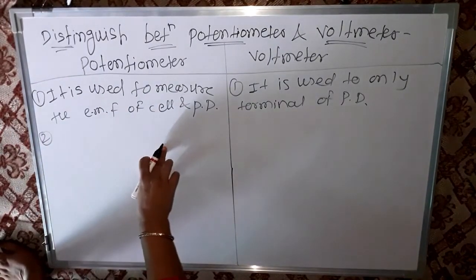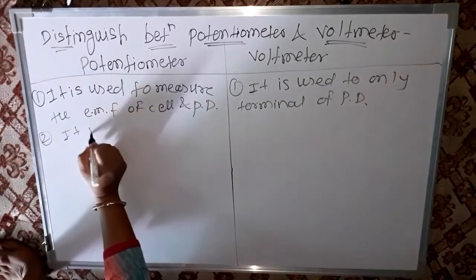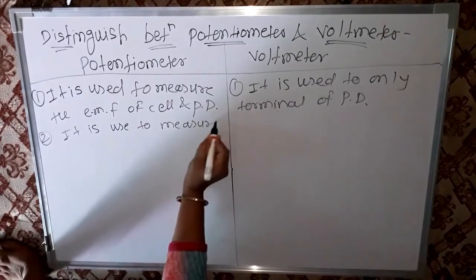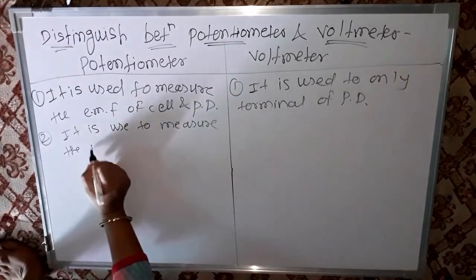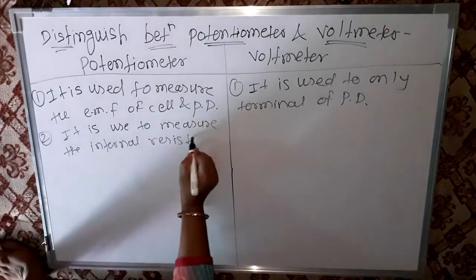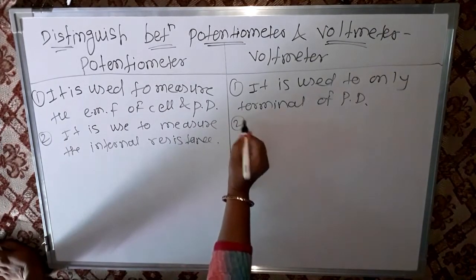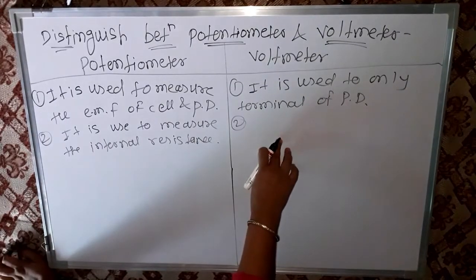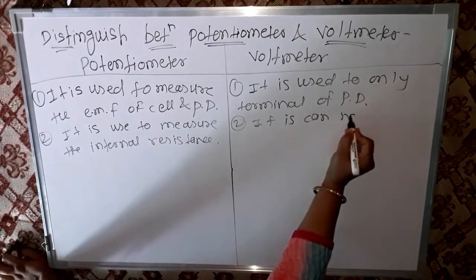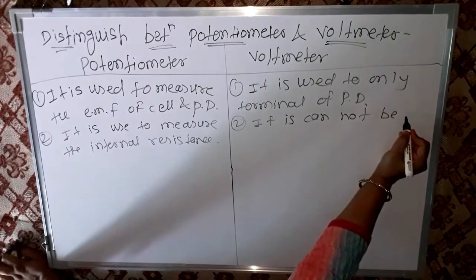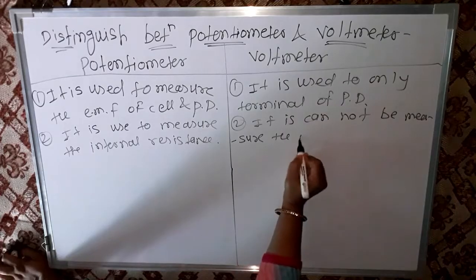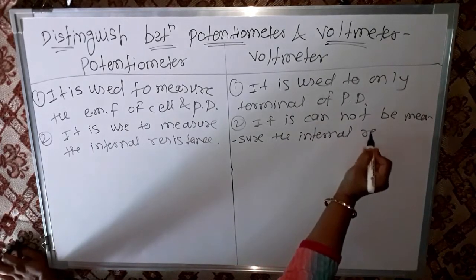Second point of the potentiometer: it is used to measure the internal resistance. In contrast, a voltmeter cannot be used to measure the internal resistance.